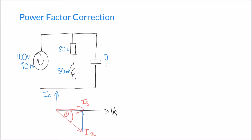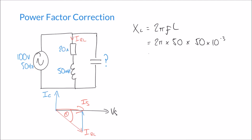To start, I want to work out the current currently flowing in the circuit before introducing the capacitor — so pretending the capacitor isn't there, we're left with one current which I'll call IRL. IRL flows through the resistor and inductor. The first thing we need to do is calculate the reactance of the inductor: XL equals 2πfL, which is 2π times 50 times 50 times 10 to the minus 3, and that comes out as 15.71 ohms.